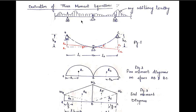We consider three consecutive supports A, B, and C. Suppose support B settles — that is, it yields through some distance. If we draw a horizontal line at B, the height of point A with respect to point B is ha, and the height of point C with respect to point B is hc. The distance of A from B is l1, and the distance of C from B is l2. The red line is the tangent at point B on the elastic curve. Points a1, a2, c1, and c2 are defined on this diagram.